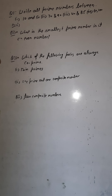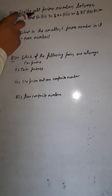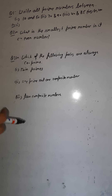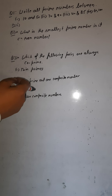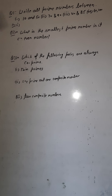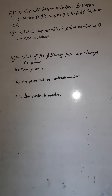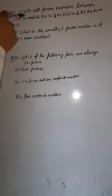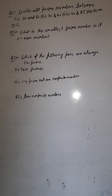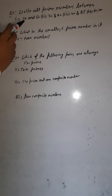For the first one, we have to write all prime numbers between 10 and 50. Prime numbers are numbers which have only two factors — the number itself and one. So you have to write all the prime numbers between 10 and 50.